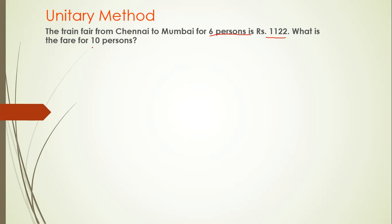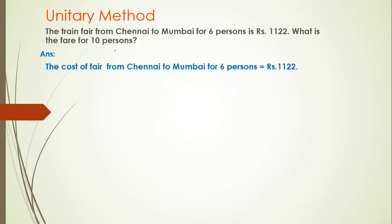They are asking for the cost of tickets for 10 persons. First we need to find the cost of one ticket. To find the cost of one ticket, we will divide 1122 by 6, and whatever quotient we get, we will multiply it with 10. The cost of fare from Chennai to Mumbai for 6 persons equals rupees 1122. The cost of one person equals rupees 1122 divided by 6.